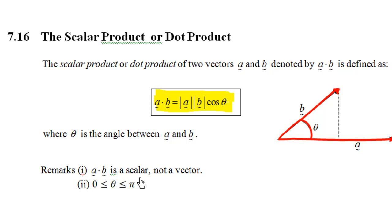Note that a dot b is a scalar, not a vector. And we always take the angle between zero and pi. That means between zero and 180 degrees.